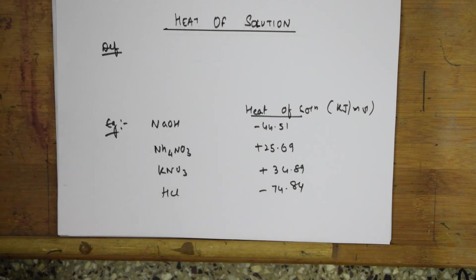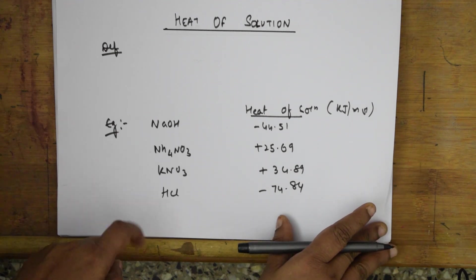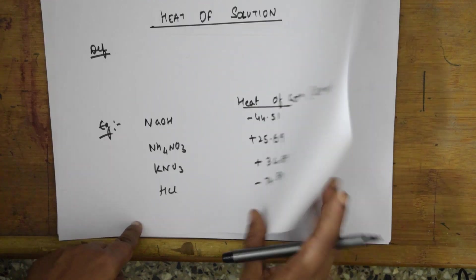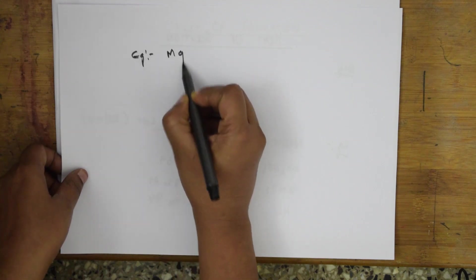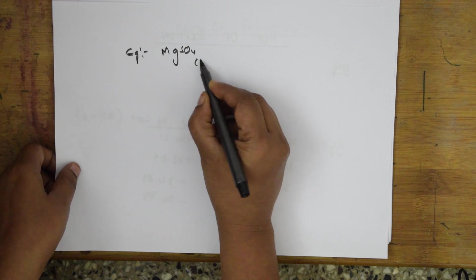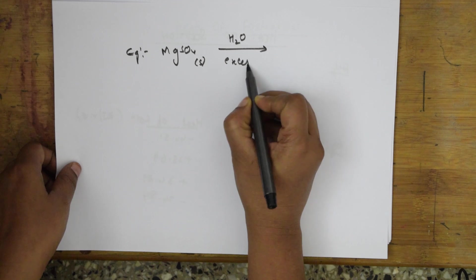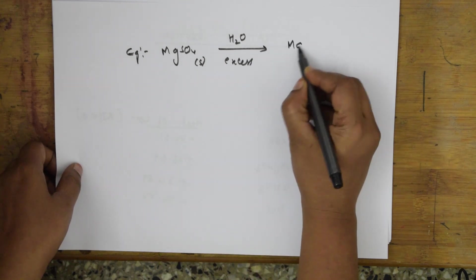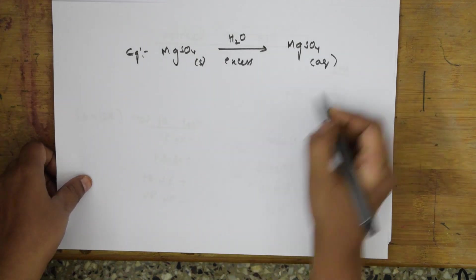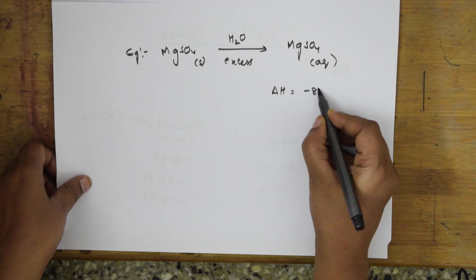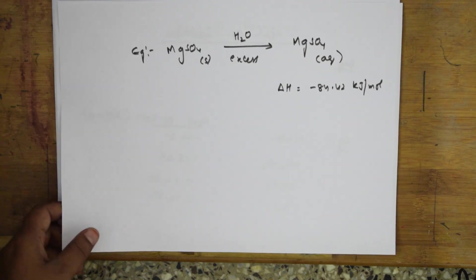I will take one more example of magnesium sulphate, then you will understand. Magnesium sulphate is in the solid state. I am going to use excess water in this case. It is getting converted from solid magnesium sulphate — because you are dissolving it in water — this becomes aqueous. The delta H value for this is minus 84.42 kilojoules per mole.